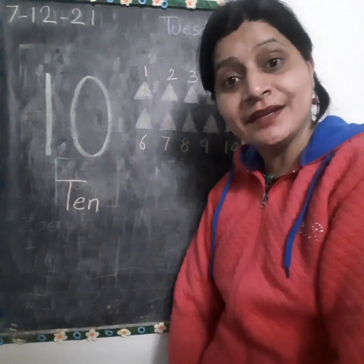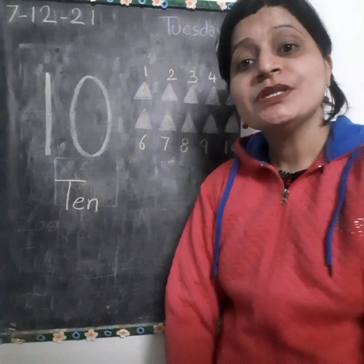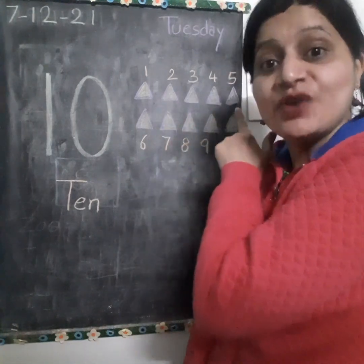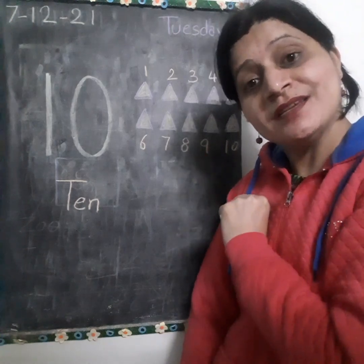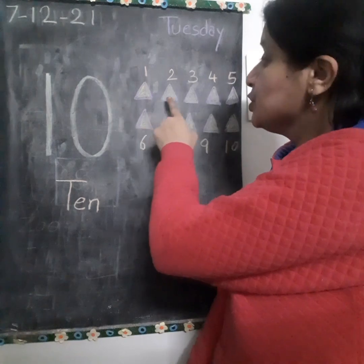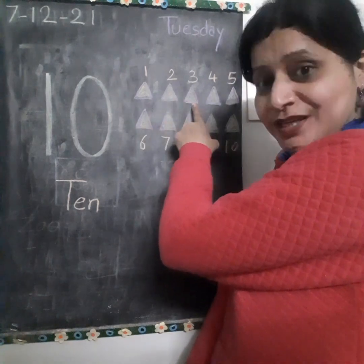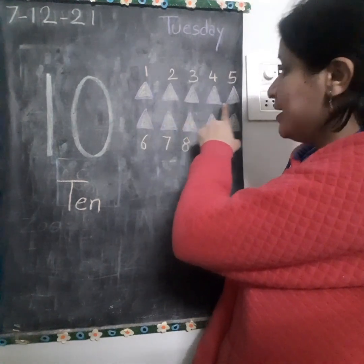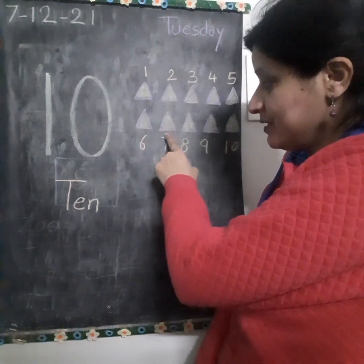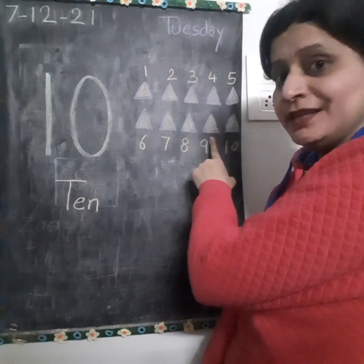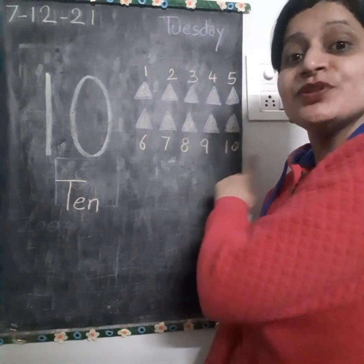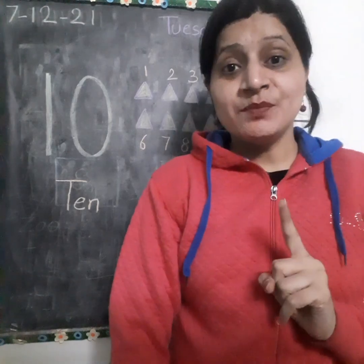1-0-10. Now, अभी देखो, यह मैंने क्या बनाया है? Triangles. Let's count these triangles, कि कितने triangles हैं? 1-2-3-4-5-6-7-8-9-1-0-10. अब आप जब भी 10 बोलोगे,